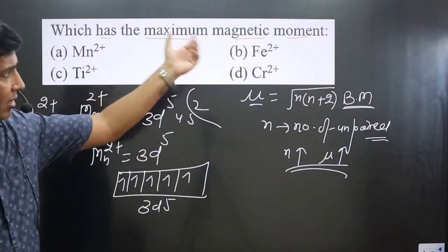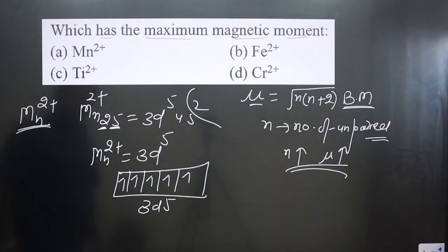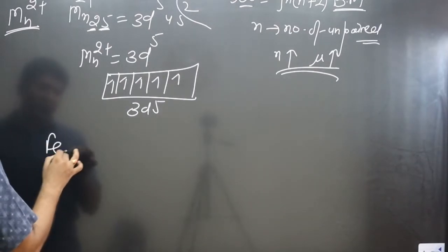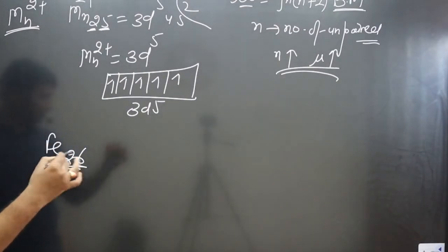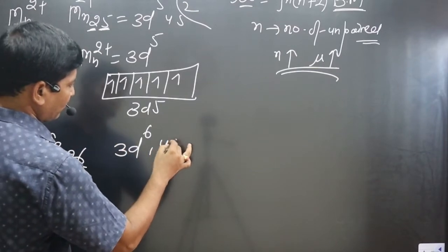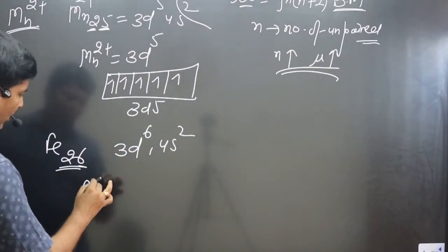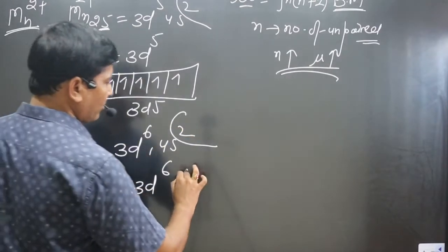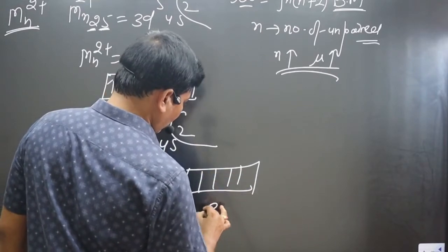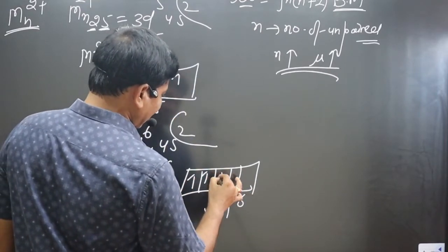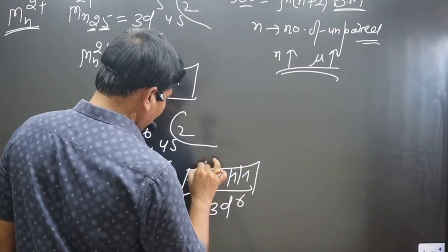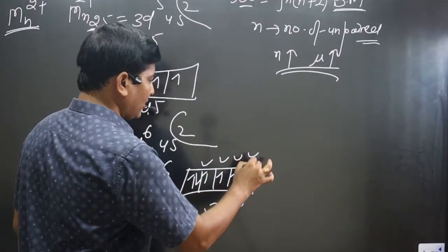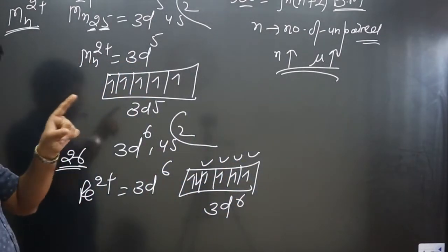For verification, let's check Fe²⁺. Iron has atomic number 26 with electronic configuration 3d⁶ 4s². Since Fe²⁺ loses two electrons, we get 3d⁶. Writing the orbital notation with five boxes, placing six electrons gives us four unpaired electrons — fewer than the five unpaired electrons in Mn²⁺.